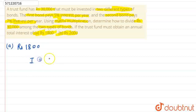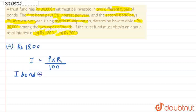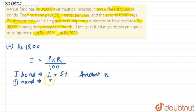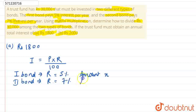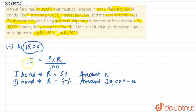First let us solve Part A, where the total interest is Rs. 1800. We know the formula: Interest = Principal × Rate of Interest / 100. The total principal is Rs. 30,000 but there are two different rates. For the first bond, the rate of interest is 5% and the amount is X. For the second bond, the rate of interest is 7% and the amount will be 30,000 minus X, since the total is 30,000. The total interest should be Rs. 1800, so we consider both bonds.